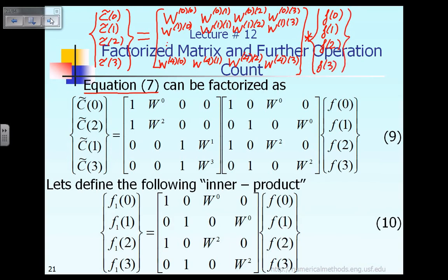So basically, that equation 7 that I described earlier can be expressed as equation number 9. What we are saying is that the coefficient matrix 4 by 4 seen in equation 7 can be considered as the product of these two matrices. So equation 7 can be expressed equivalently as equation number 9.